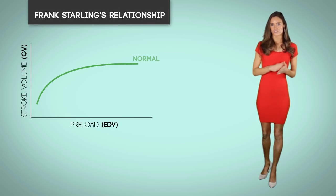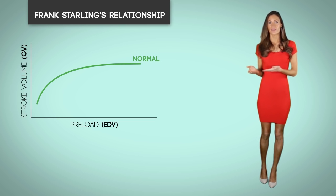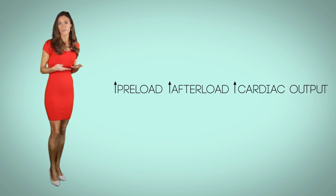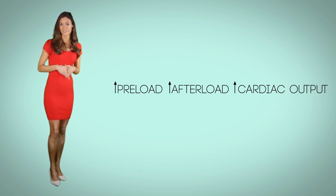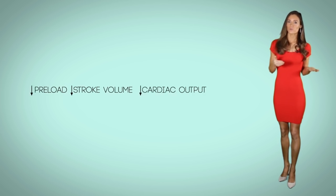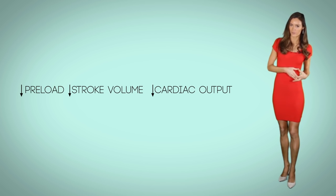Referring back to the Frank-Starling graph, a normal person's heart functioning with a healthy preload and stroke volume will equal good cardiac output. When the heart is injured and the preload is high, the greater the stretch and therefore the greater the squeeze and resistance the heart must overcome to push blood into the systemic circulation. So if the preload is high, the afterload will be high and the cardiac output will be high as well. On the other hand, when the heart is injured, the preload will be low, the stroke volume will be low, and the cardiac output will be low as well.